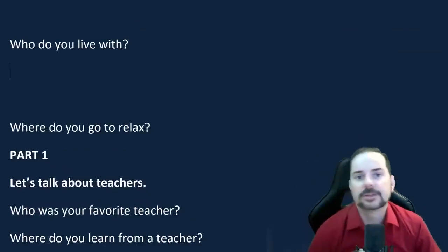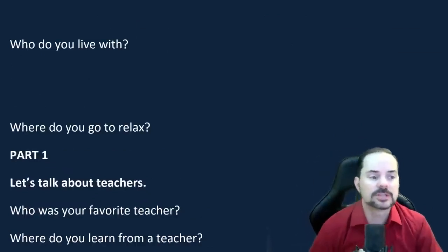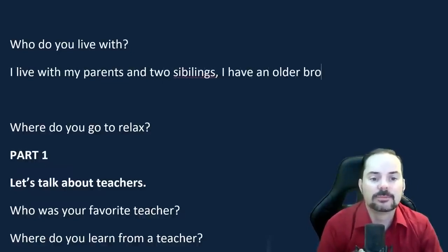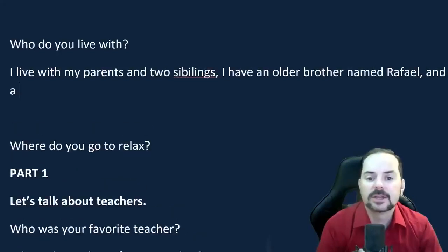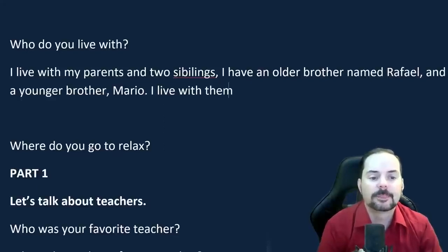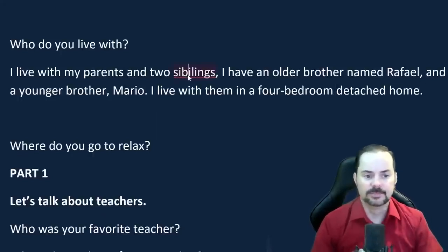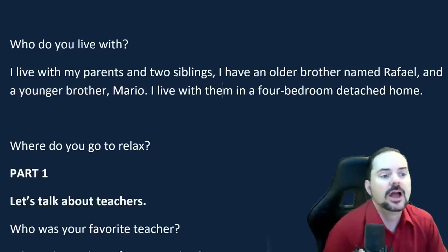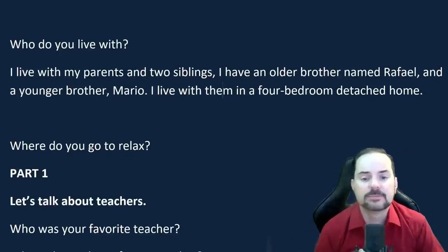Next question: 'Who do you live with?' A good answer: 'I live with my parents and two siblings. I have an older brother named Raphael and a younger brother, Mario. I live with them in a four-bedroom detached home.' That's your nice full sentence answer including specific detail.